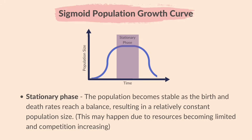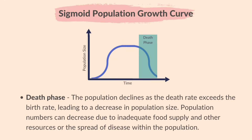During the stationary phase, the population becomes stable as the birth and death rates reach a balance, resulting in a relatively constant population size. This may happen due to resources such as food becoming limited and competition increasing. In the death phase, the population declines as the death rate exceeds the birth rate, leading to a decrease in population size due to inadequate food supply, other limited resources, or the spread of disease.